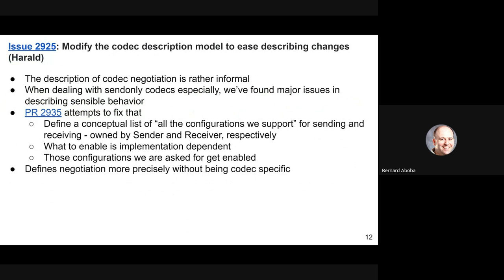I looked at the description of how codec negotiation is described in WebRTC PC. The angle I came in on was from trying to define user-defined codecs for encoder transform, but I found it to be very informal. You can't really write tests for something that says to match up a list with this other list. So I was wondering whether it makes sense to describe it differently, and I made a PR.